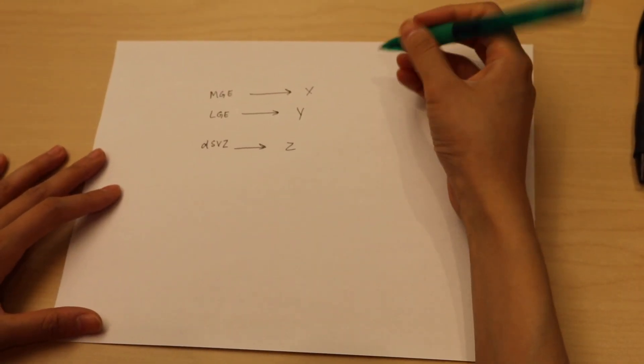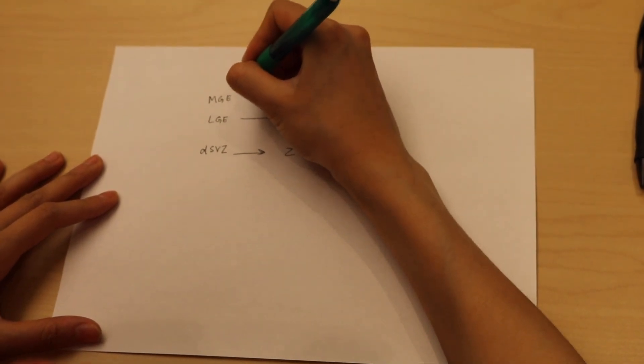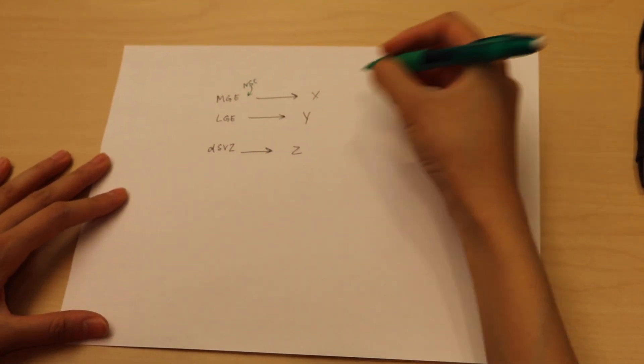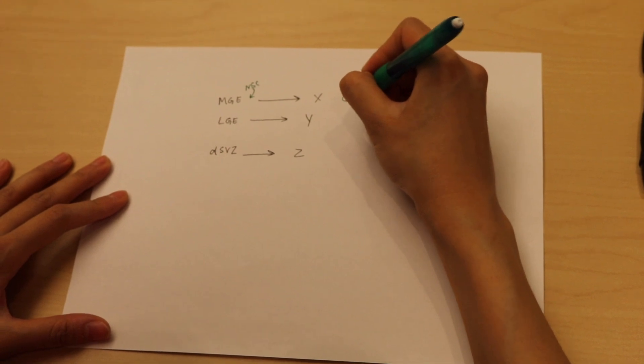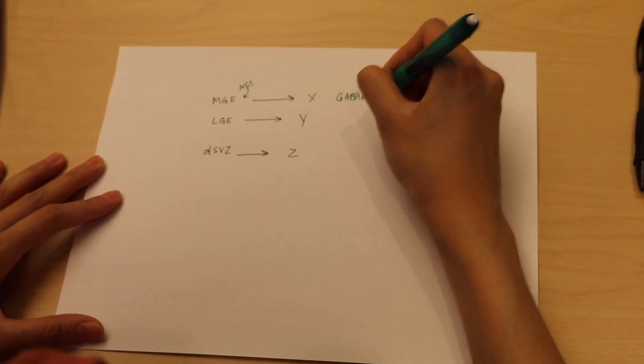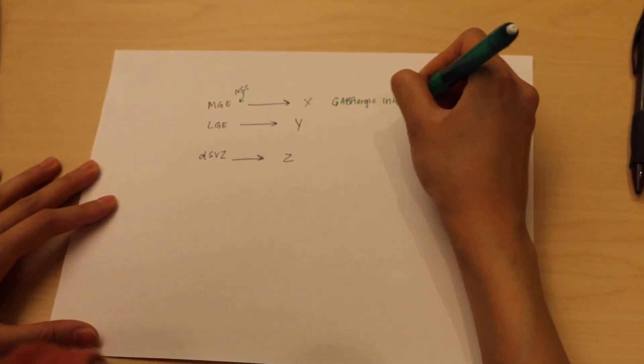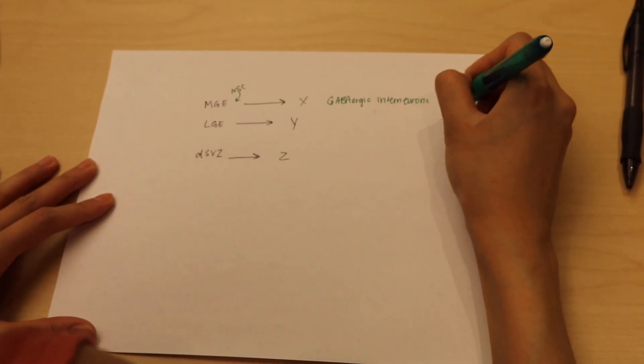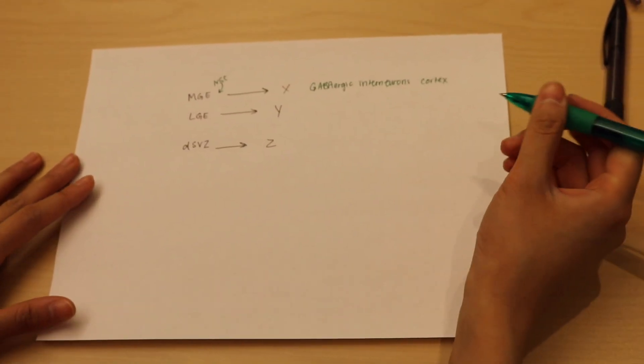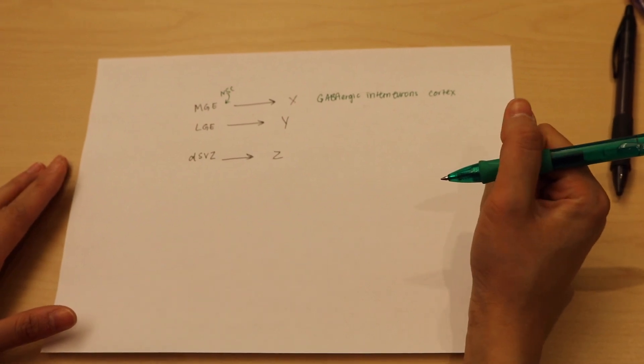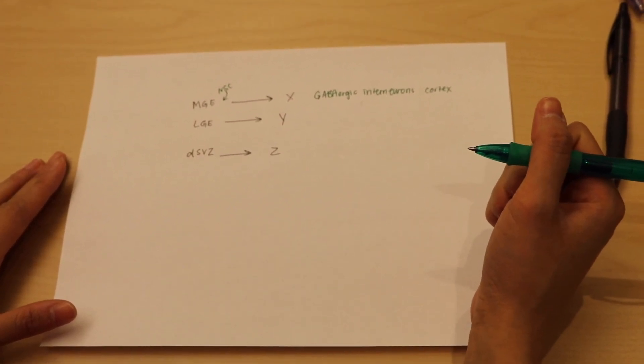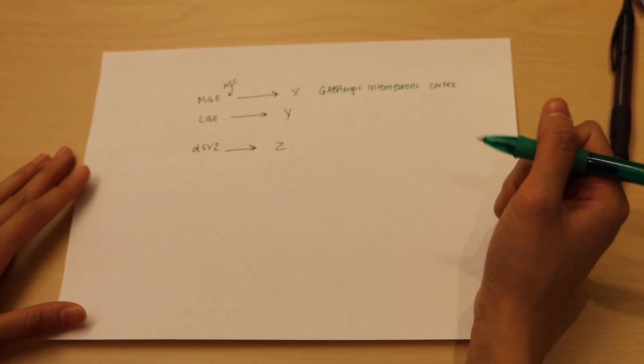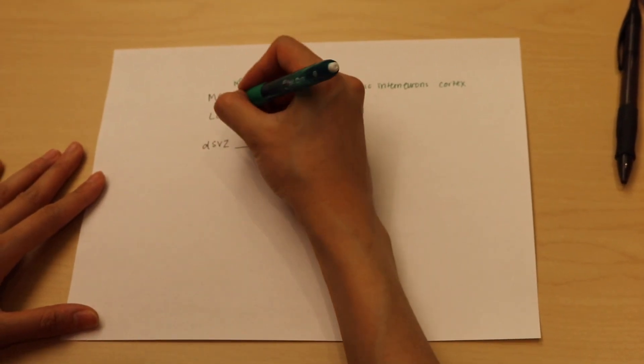So for example, the medial ganglionic eminence—these neural stem cells here will give rise to GABAergic interneurons of the cortex. These neurons essentially have inhibitory action, and they regulate and allow for proper functioning and forming of networks within the cortex.